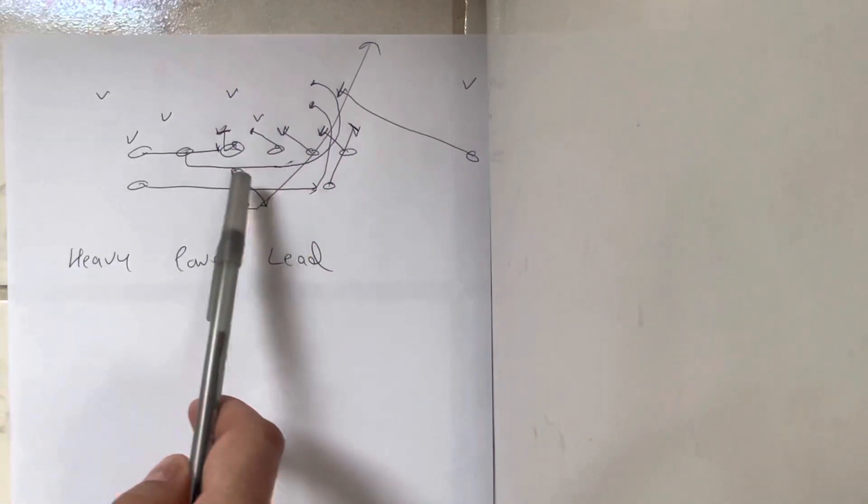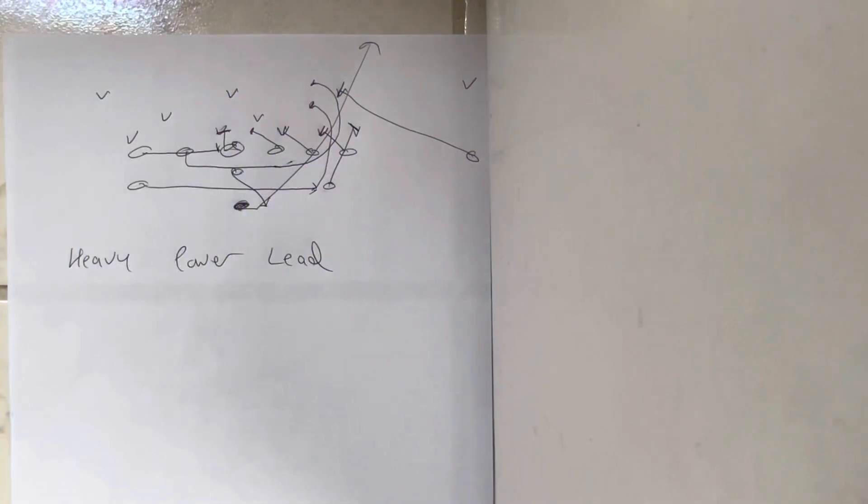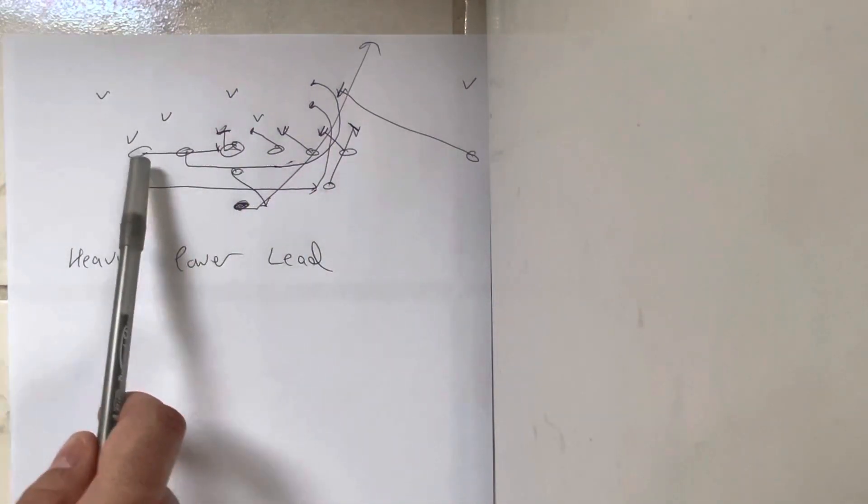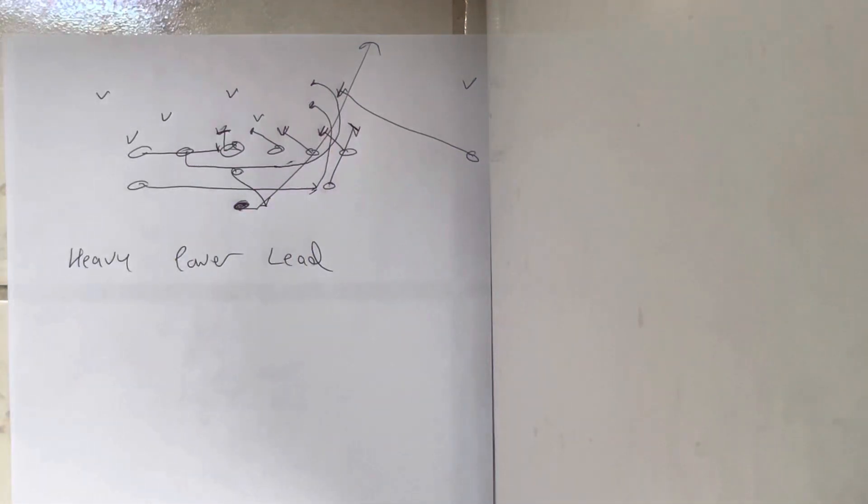Tackle's going to block down. The guard's going to block down. The center's going to block back. The backside receiver's going to scoop—he's going to spread his belly button through the hip at the center, canceling the B-gap.